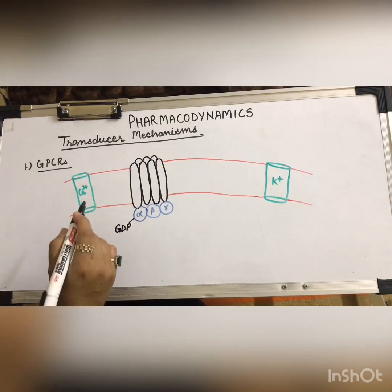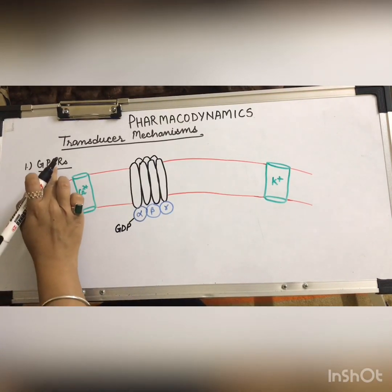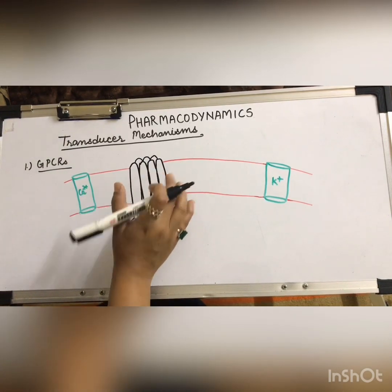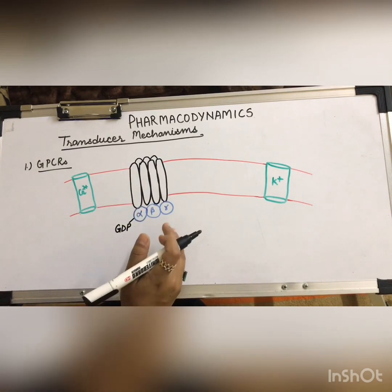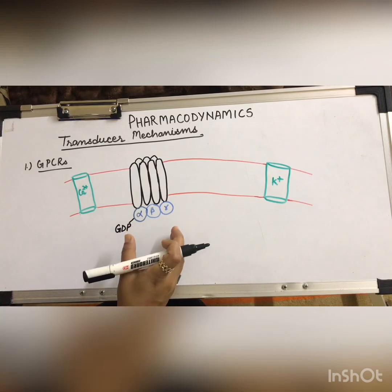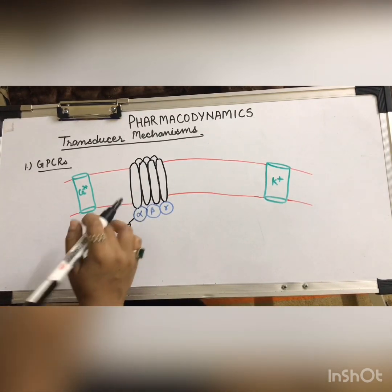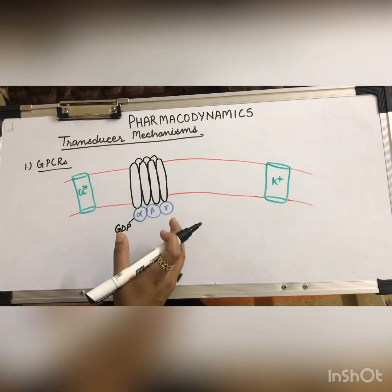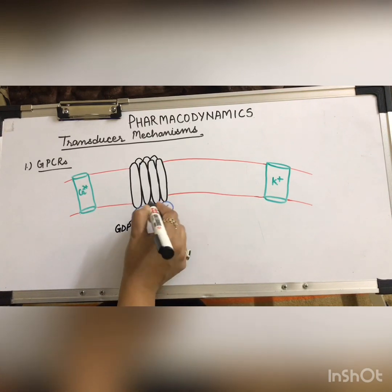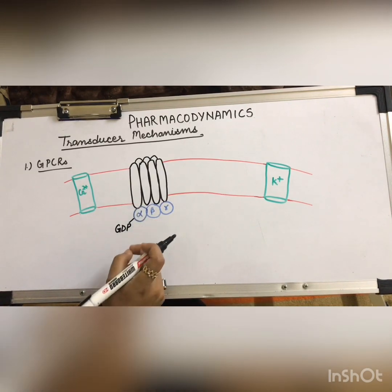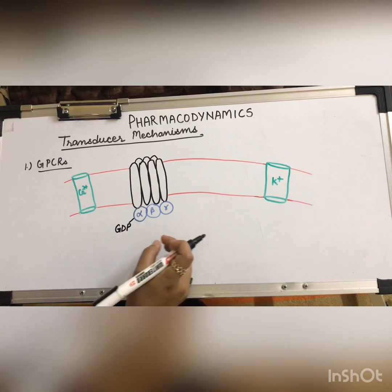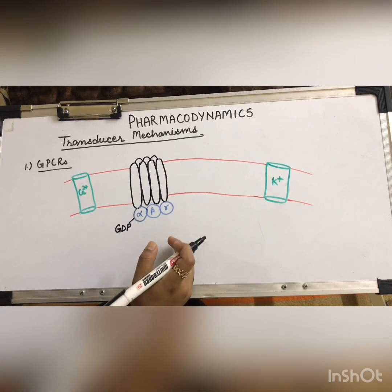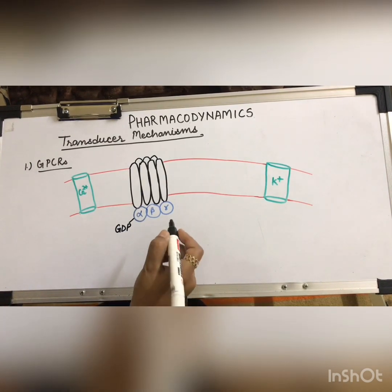The first transducer mechanism is G protein coupled receptors, also known as GPCRs. These are cell membrane receptors which are linked to the effector — the effector can be any ion channel, any carrier protein, or enzymes. They are known as G protein coupled receptors because they are coupled with GTP-activated proteins, that is guanosyl triphosphate activated proteins.